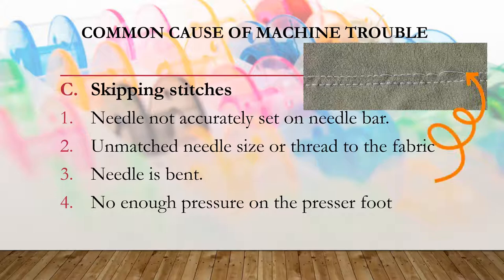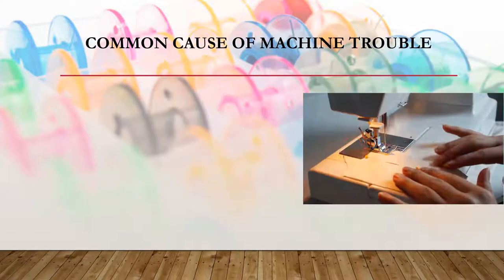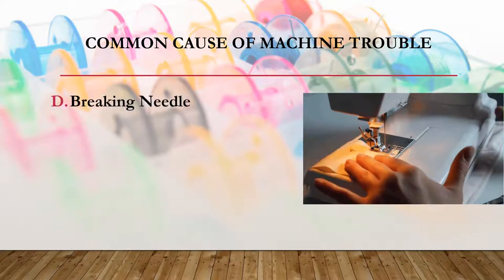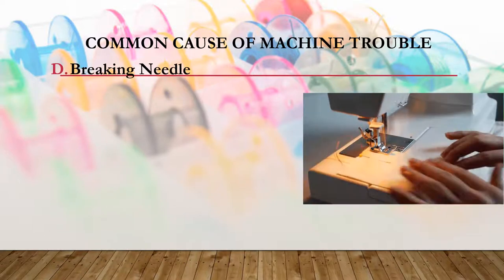Another cause of skipping stitches is not enough pressure on the presser foot. You need to adjust the thumb screw so that enough pressure is given to the presser foot while sewing on the fabric. Another sewing machine trouble you can encounter is when the needle breaks.